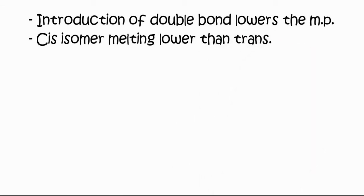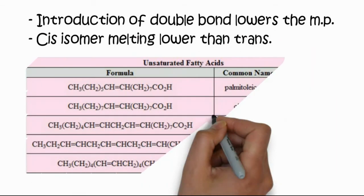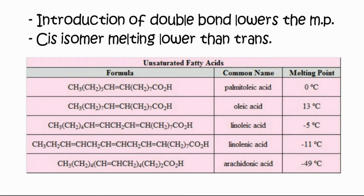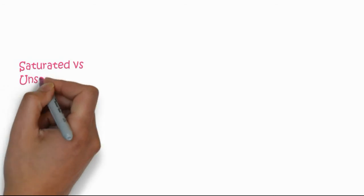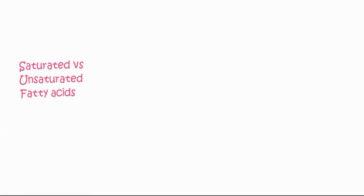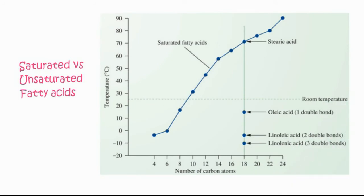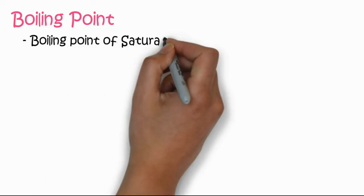Introduction of double bonds lowers the melting point of the fatty acid. Similarly, cis isomers have a lower melting point than trans. Palmitic acid has a higher melting point of 61 degrees, while oleic acid is at 13 degrees, and linoleic acid is at minus 5. You can see the increase in chain length increases melting point, while oleic and linoleic acids have lower melting points.